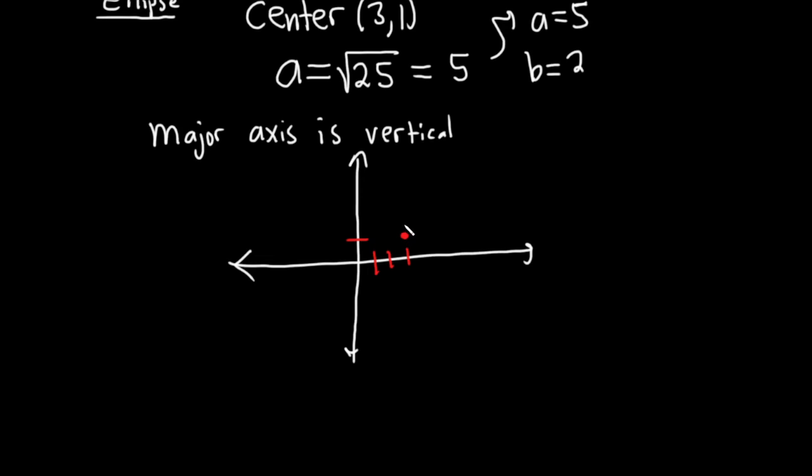So from the center, because the major axis is vertical, we're going to go up and down by 5. So 1, 2, 3, 4, 5. So right there, it's a rough point. Then down by 5. 1, 2, 3, 4, 5. That's roughly there.